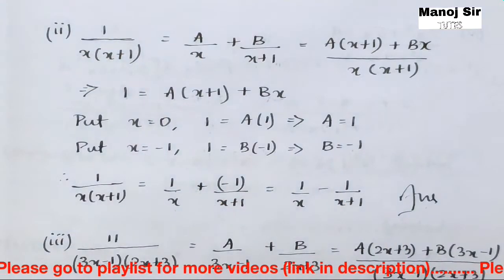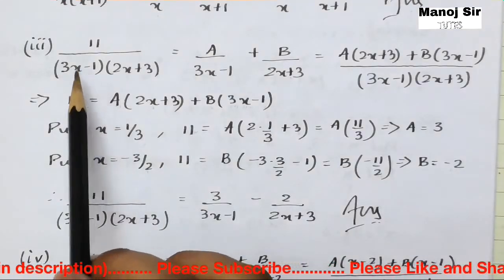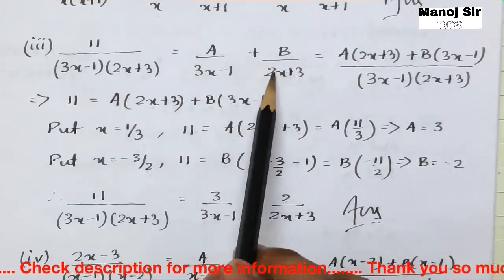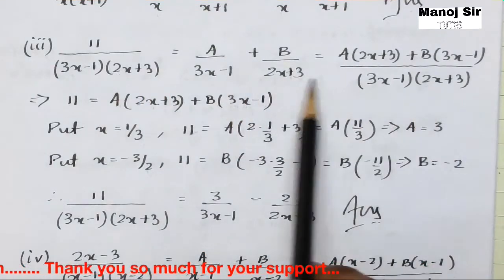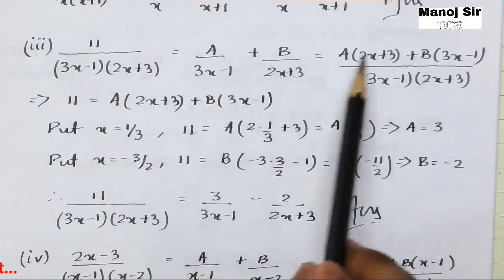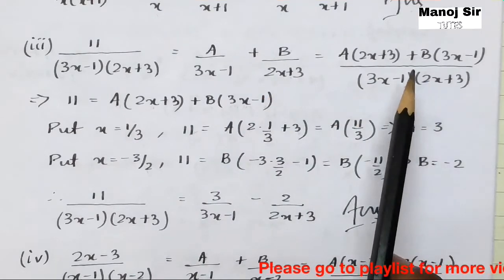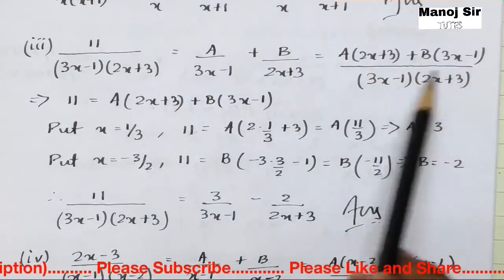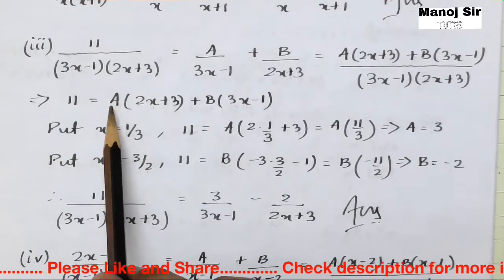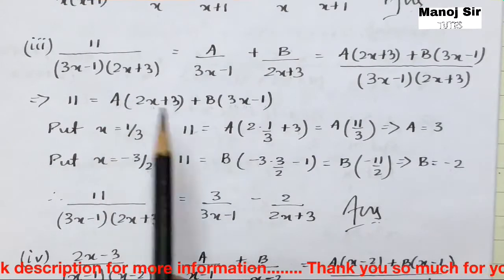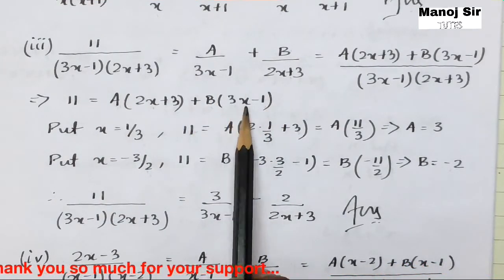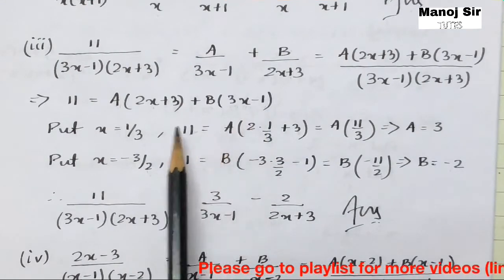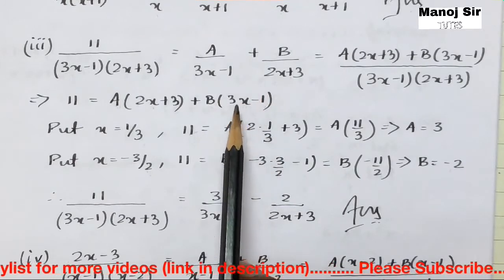Third example: 11 upon (3x−1)(2x+3). We write this as A upon (3x−1) plus B upon (2x+3). Taking LCM, the numerator becomes A(2x+3) + B(3x−1). Comparing: 11 = A(2x+3) + B(3x−1). To find A, we set 3x−1 = 0, giving x = 1/3.